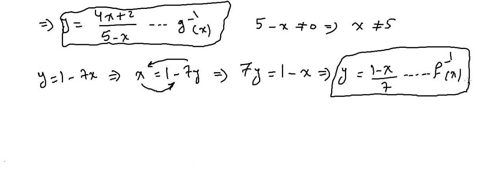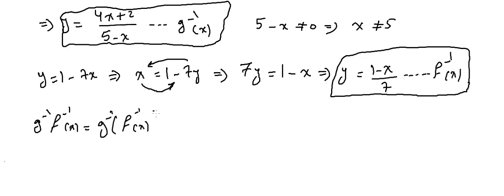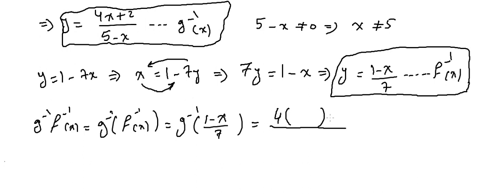Now we compute g⁻¹ of f⁻¹ of x. This equals g⁻¹ applied to f⁻¹(x), which is (1 minus x) over 7. We substitute (1 minus x)/7 into g⁻¹(x) = (4x plus 2) over (5 minus x), replacing every x with (1 minus x)/7.